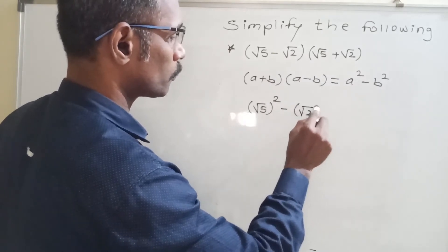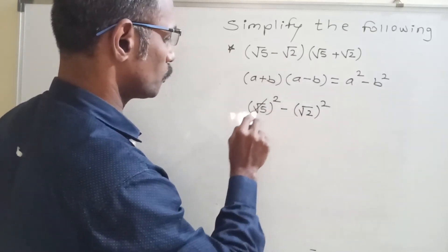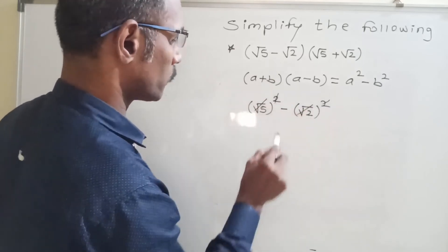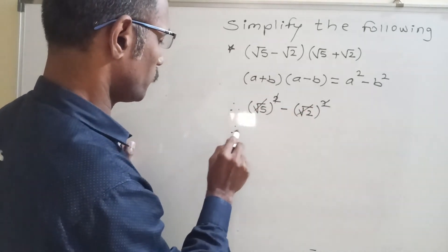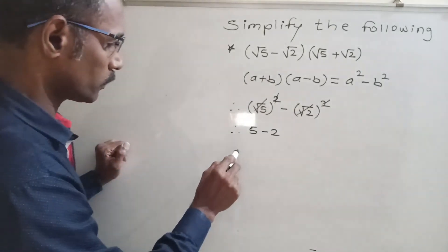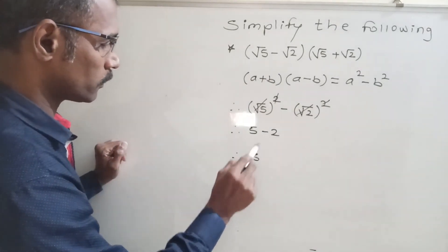Now square root and square, square root and square cancel. Therefore we write here 5 minus 2, therefore final answer 3.